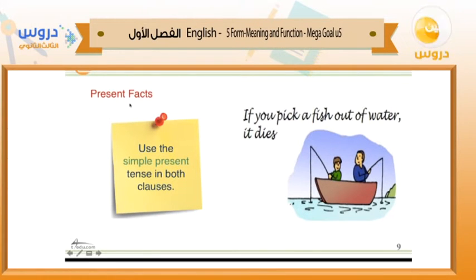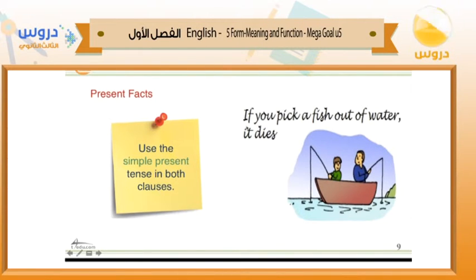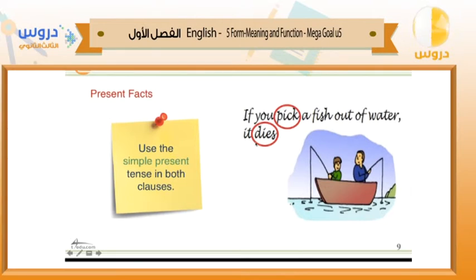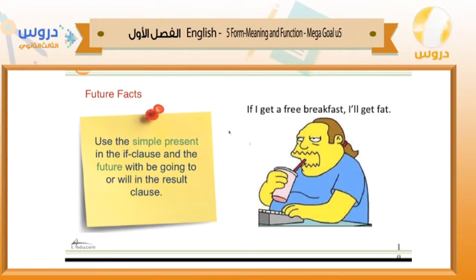Let's look at present facts in if-clauses in detail. Consider: 'If you pick a fish out of water, it dies.' This is a fact, so we use simple present tense in both clauses — the cause clause (or if-clause) and the result clause. If you pick a fish out of water — present simple — it dies — present simple. Both the if-clause and the result clause use simple present tense for present facts.